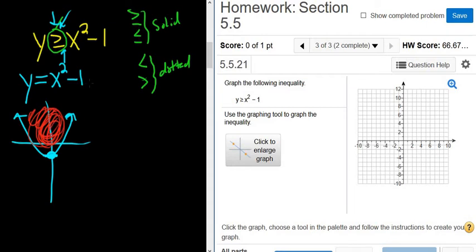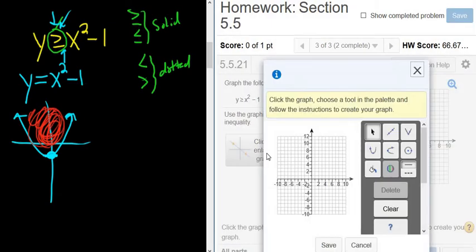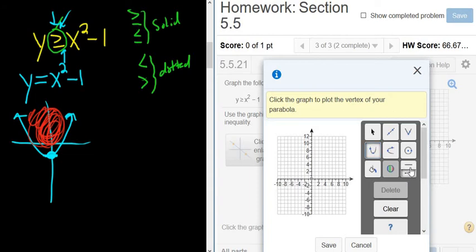Now we have to transfer our answer over to the homework problem. I'm going to click here to enlarge the graph. And here's the parabola tool right here. I'm going to click that. Notice there's options for dotted and solid. We're going to go with solid.